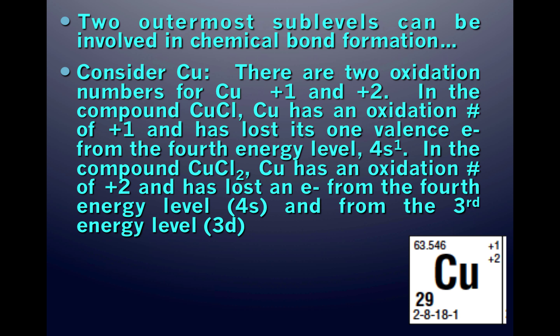The two outermost sublevels can be involved in chemical bond formation. Let's consider the element copper. Copper has an electron configuration of 2, 8, 18, and 1 — two electrons in the first energy level, 8 in the second, 18 in the third, and 1 in the fourth.